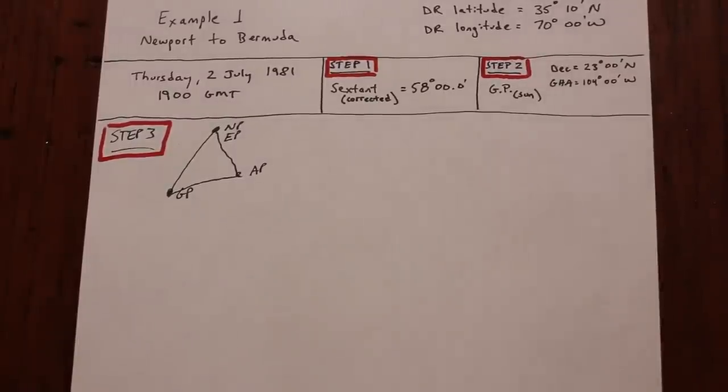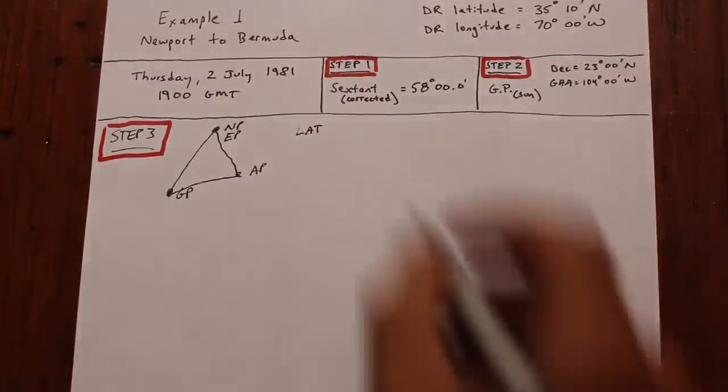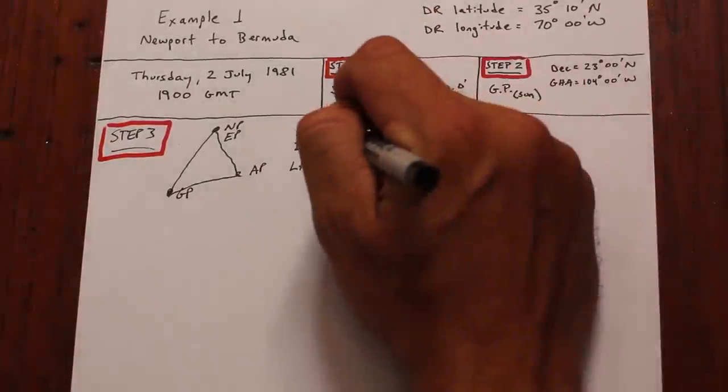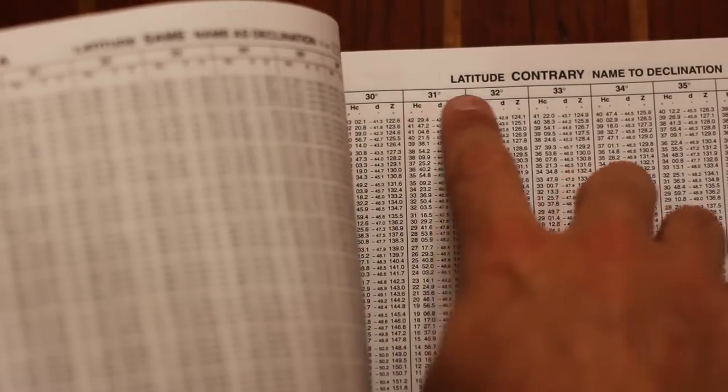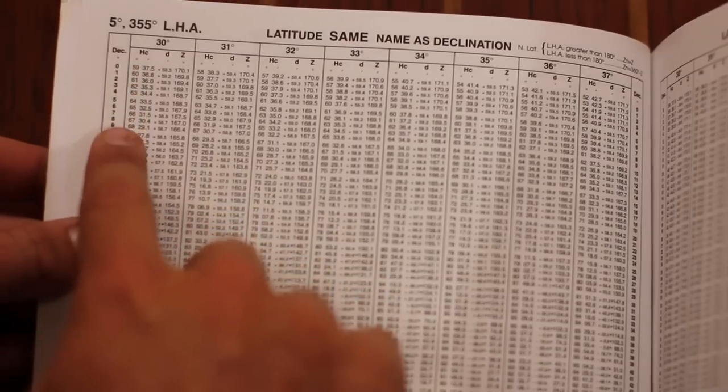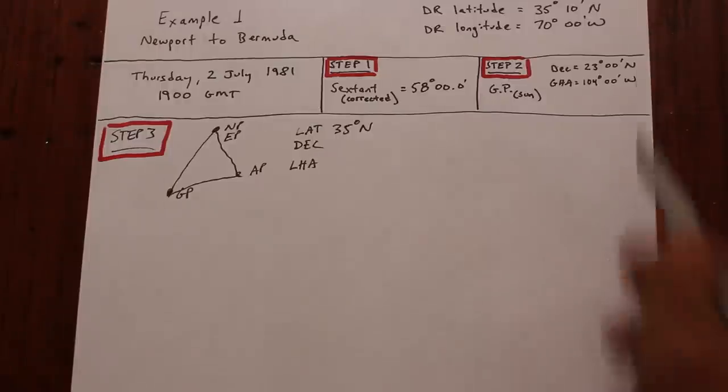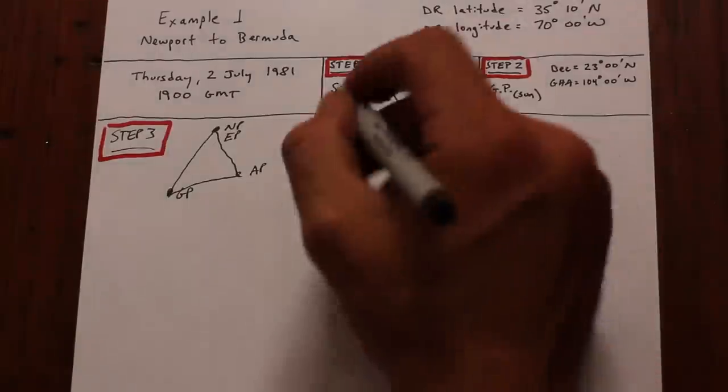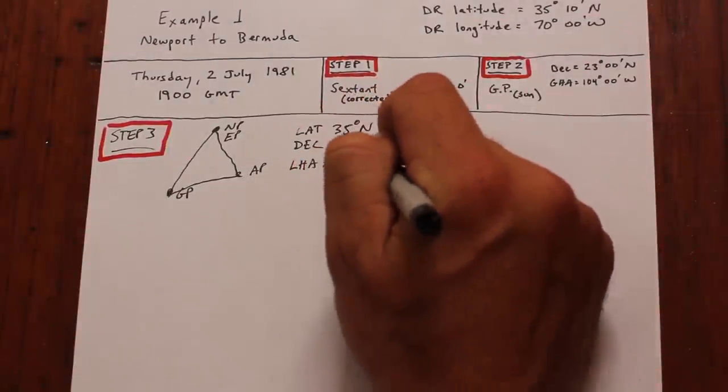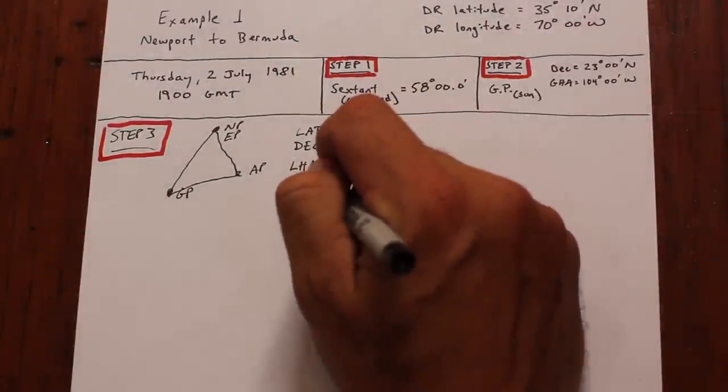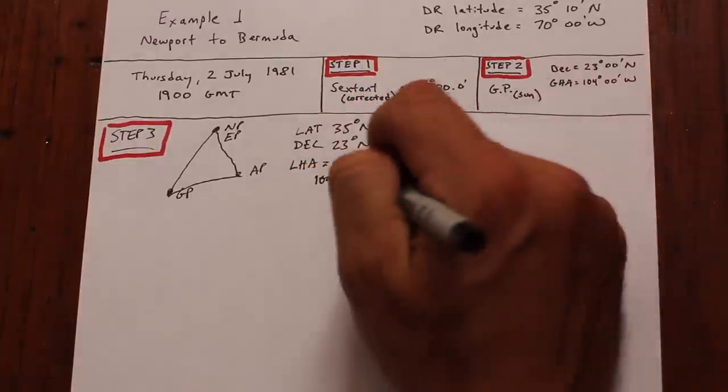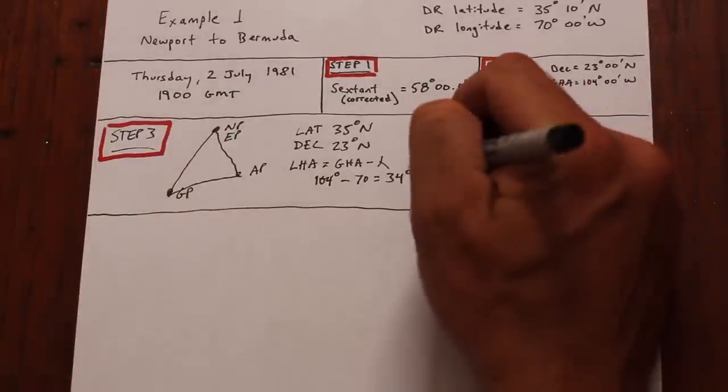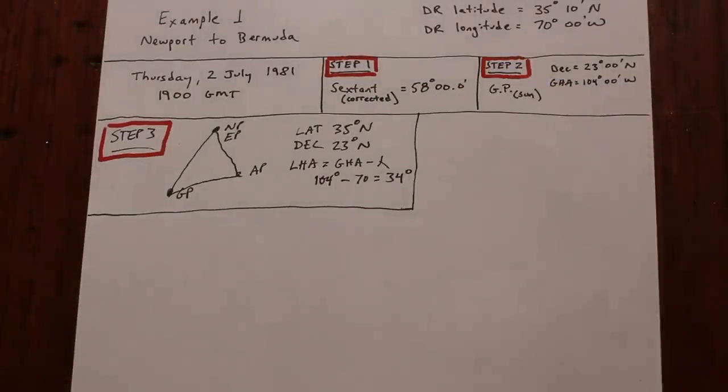First, latitude. We want the nearest whole latitude to our DR, either up or down. Since the assumed position is arbitrary, we can pick a convenient whole number. Second is declination. It's pulled right from the GP of the sun. In this case, it's a whole number, so life is good. Finally, LHA. We know that it's GHA minus longitude, and in this case the math is easy. But always remember that the AP is arbitrary, so you can choose a convenient DR longitude. Our LHA is 34.